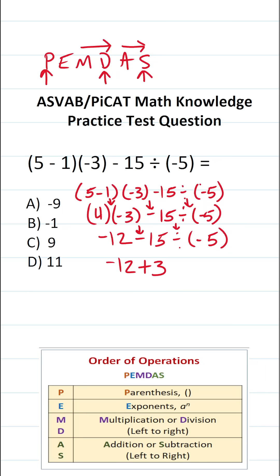Now we only have one operation left, notably negative 12 plus 3, which is going to be negative 9. So the answer to this one is A, negative 9.